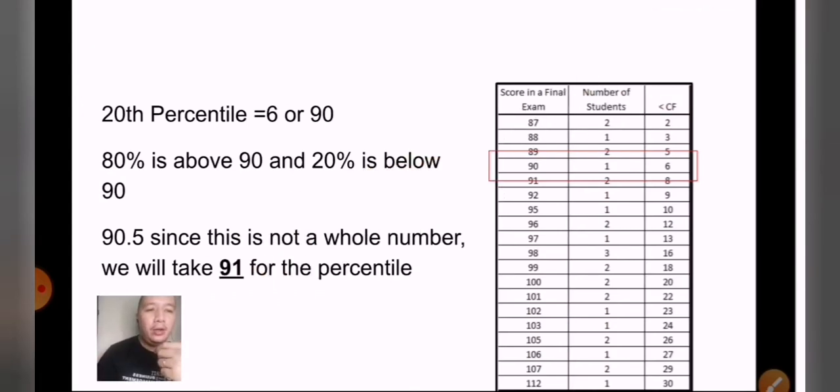So here we can see that first, we have to organize the data in an ascending order because our given shows an ungrouped or unorganized data. So here we have 87 as the lowest, and then your highest is 112. On the second column, it shows the total number of students who have had that score. So we can see that there were two who got 87, and then we will transfer 2 to the less than cumulative frequency. 2 plus 1 is 3, 3 plus 2 is 5, 5 plus 1 is 6, 6 plus 2 is 8, and so on and so forth.